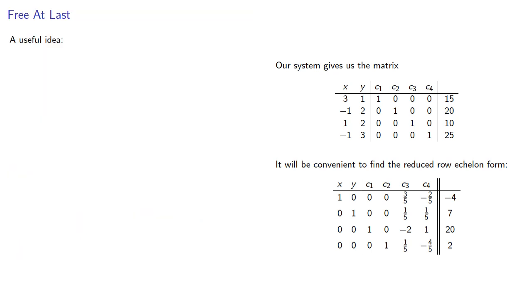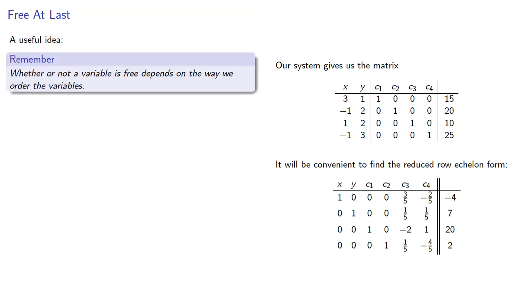Now, at this point, we'll introduce a useful idea. Whether or not a variable is free depends on the way we order the variables. In this problem, c3 and c4 are the free variables only because they were listed last. What if they weren't?